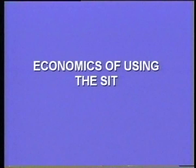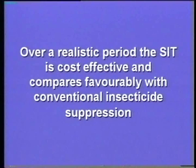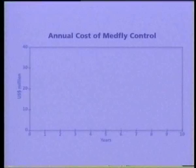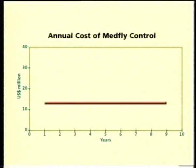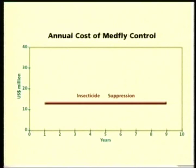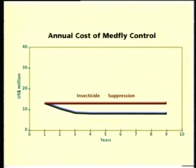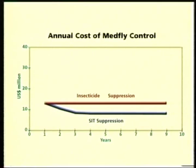Regarding the economics of using the SIT, cost-benefit analyses show that when viewed over a realistic period, the SIT is cost-effective and compares favorably with conventional insecticide suppression, even neglecting the environmental costs of insecticide application. To illustrate, in a feasibility study of the economics of medfly control, the annual cost of insecticide suppression is relatively expensive, and the operations continue indefinitely. SIT suppression also continues indefinitely, but it costs less than insecticide suppression, and is environment-friendly and compatible with the biological control of other pests.